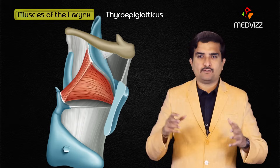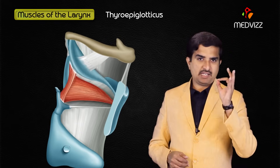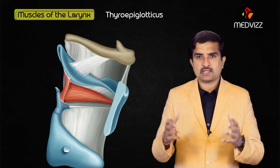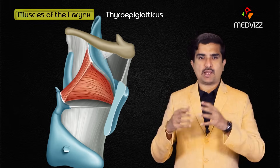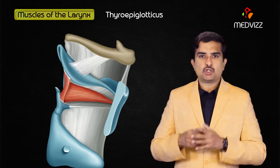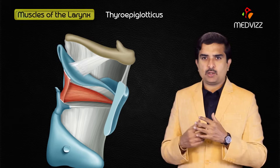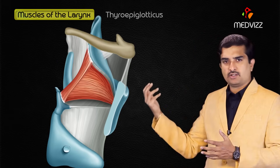The thyroepiglotticus runs from the thyroid laminae to the lateral aspect of the epiglottis. Its main action is to hold the epiglottis closed during swallowing, preventing the entrance of food or liquid into the larynx during deglutition.